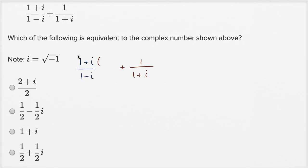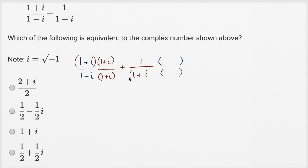So let's multiply the numerator and denominator of the first fraction times (1+i), and multiply the numerator and denominator of the second fraction times (1-i). Notice that (1+i)/(1+i) is just one, so we aren't changing the value — we're just finding another way of expressing it. Similarly, multiplying by (1-i)/(1-i) is also just one.